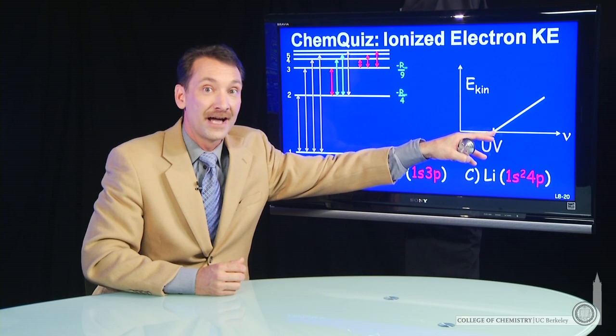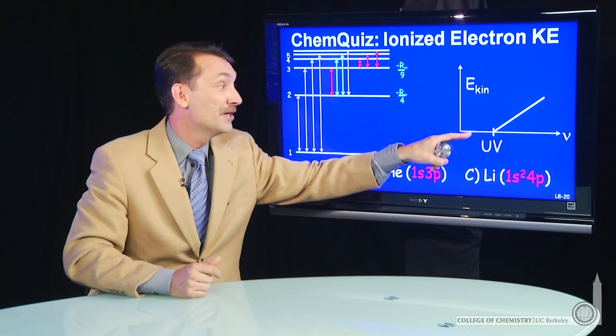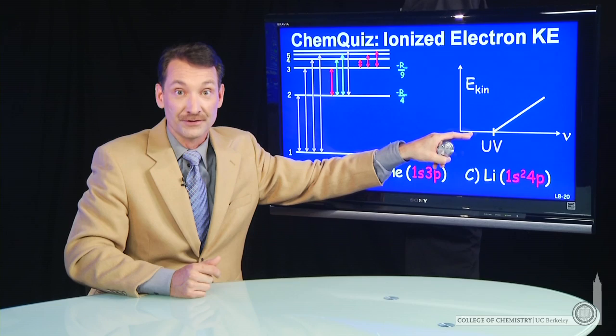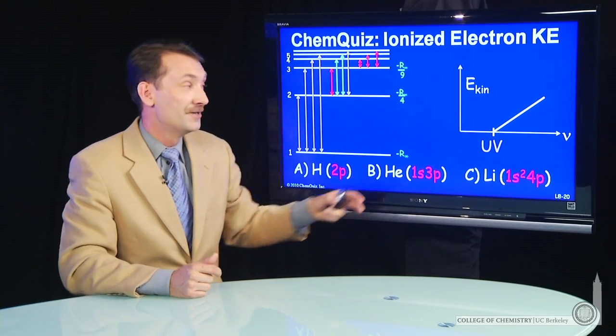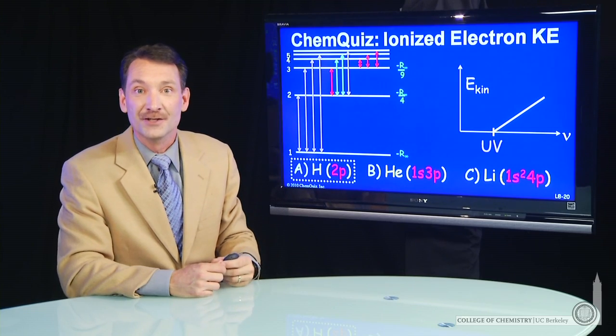So ultraviolet ionization is appropriate for hydrogen. For helium and lithium, they'll be less than that, we know. So they would come at lower frequency thresholds than the ultraviolet. This kind of plot is most appropriate for hydrogen in the 2p state.